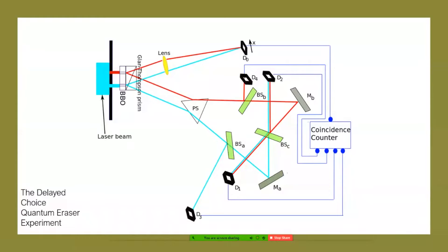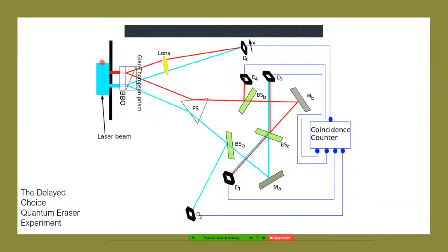Here is the delayed choice quantum eraser experiment. If you've never seen it before it looks very complicated at first, but it truly isn't and I'm taking you through it step by step, so there's absolutely no need to worry. This is merely the double slit — here are the two slits — but what happens is the photon hits a BBO crystal.